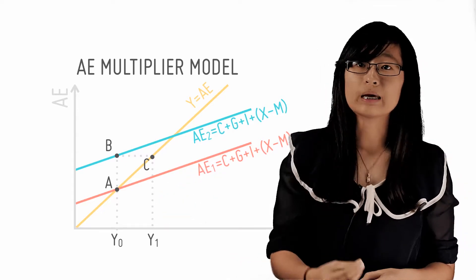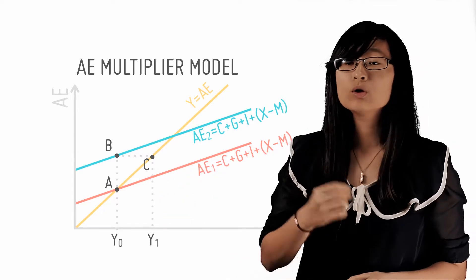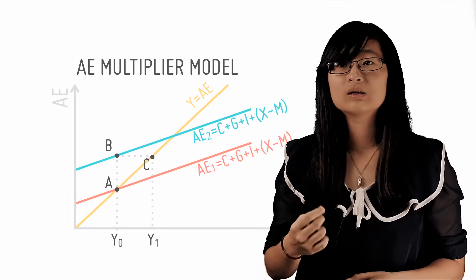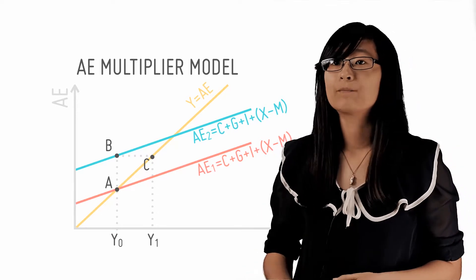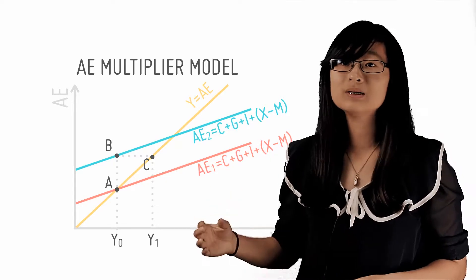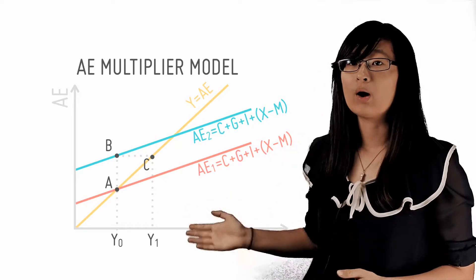In order to do this, they must engage more factors of production, which include labour, and thus they will pay more factor income. Hence, national income increases by BC to the new output level Y1.